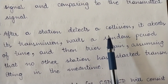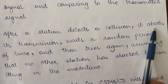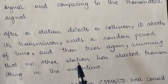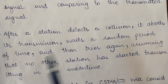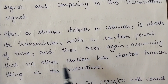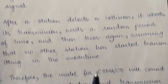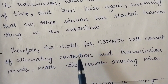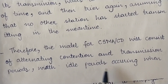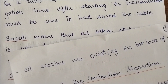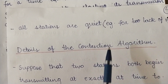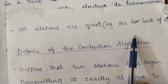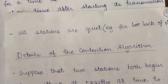Once a collision is detected, the station aborts its transmission. After aborting, it waits for a random period of time, then tries again, assuming no other station has started transmitting in the meantime. Therefore, the model for CSMA/CD consists of alternating contention and transmission periods, with idle periods occurring when all stations are quiet — either due to no data to send or because they are waiting a random amount of time.